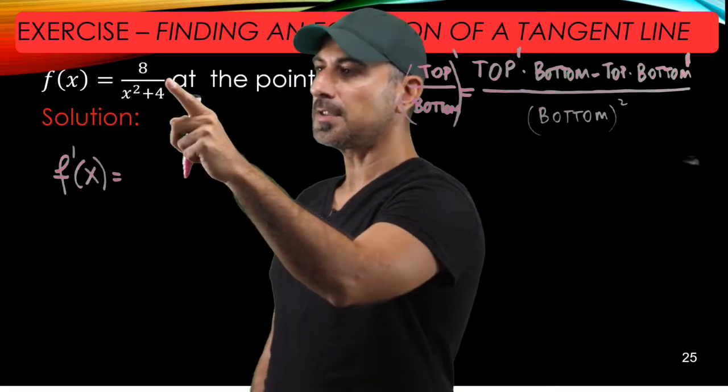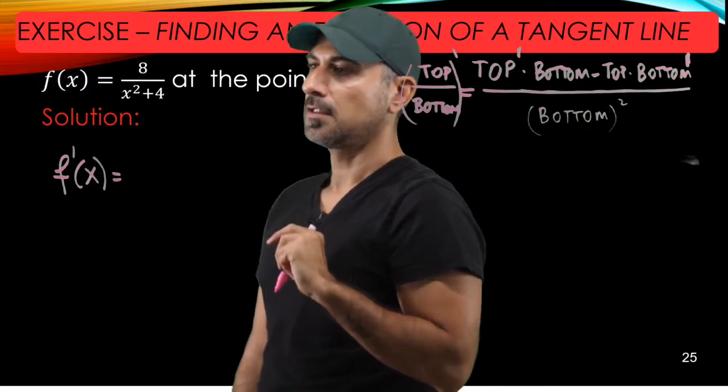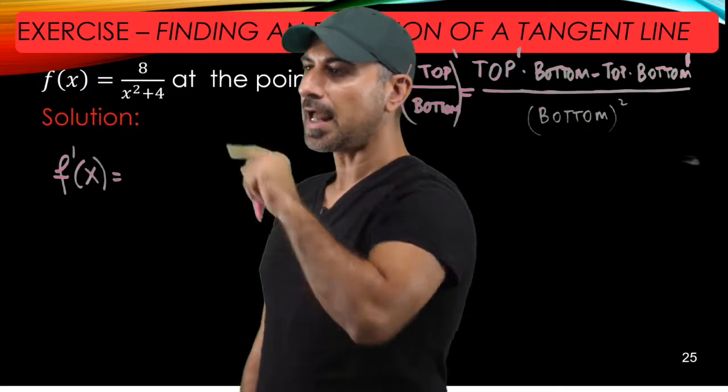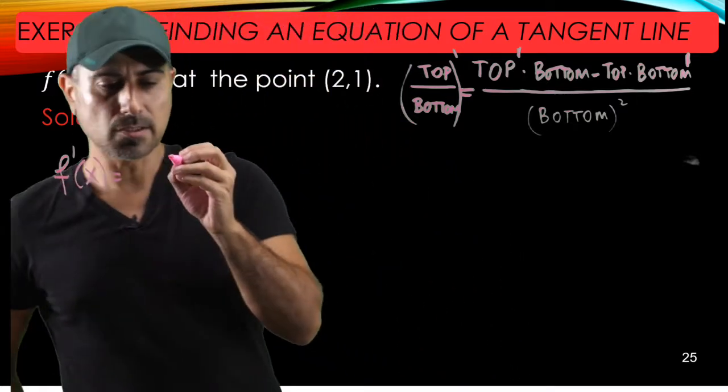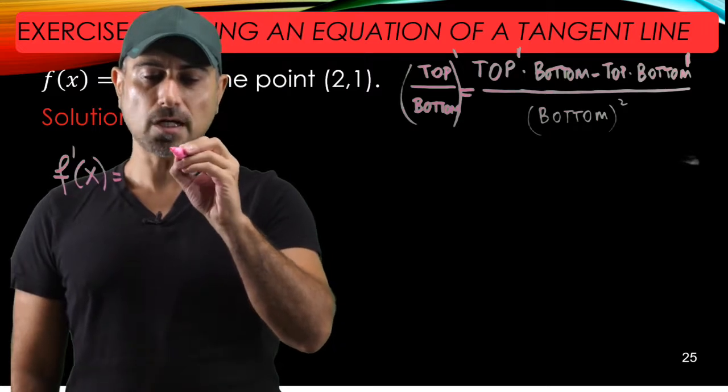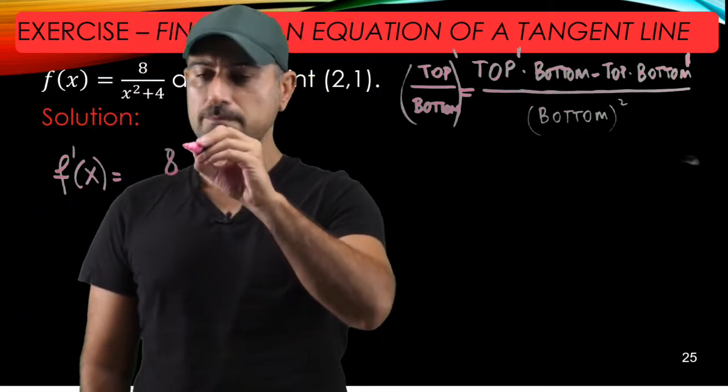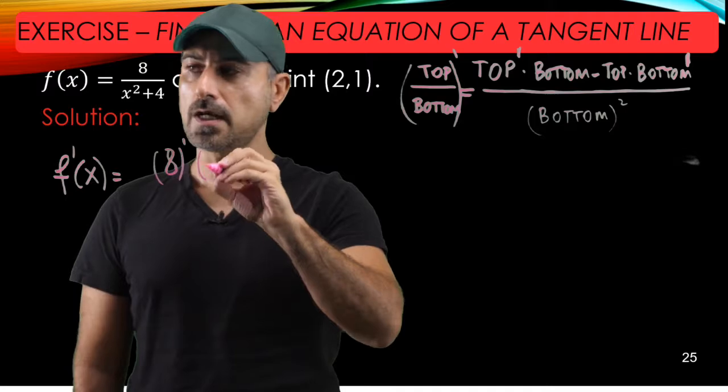For our function, the top is this constant 8 and the bottom is x squared plus 4. So why don't we write this explicitly? f'(x) is going to be the derivative of the top, so 8 prime times the bottom.